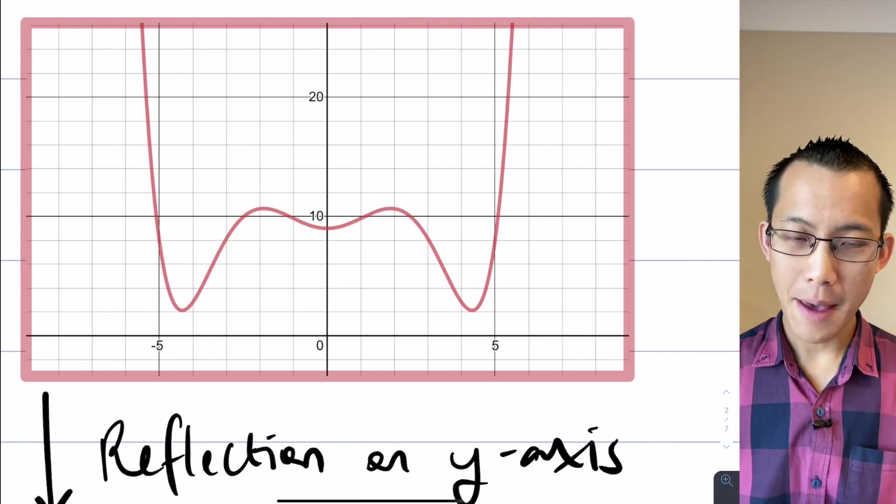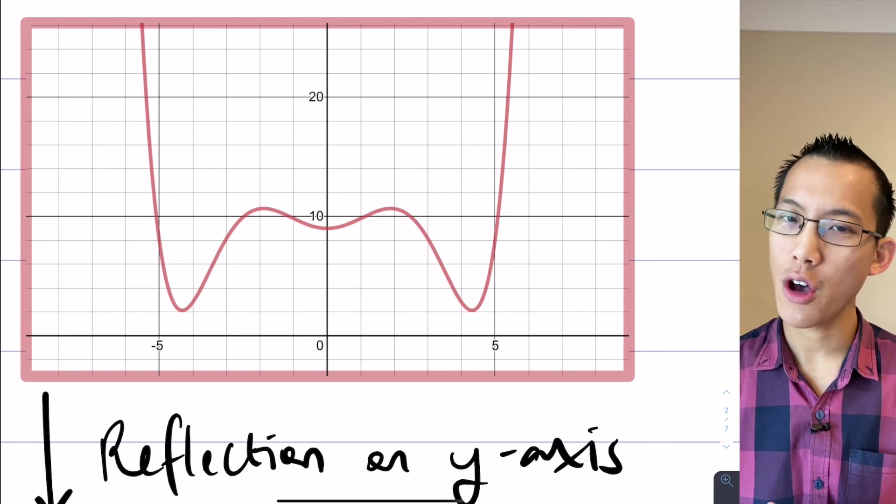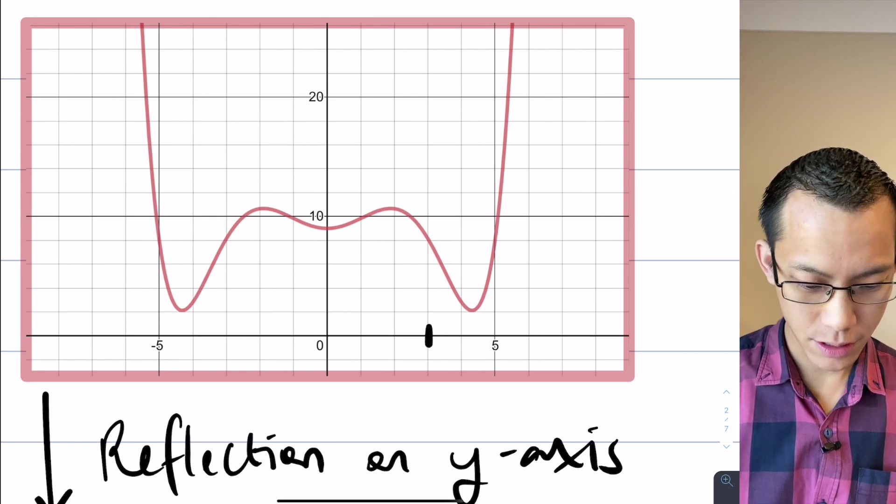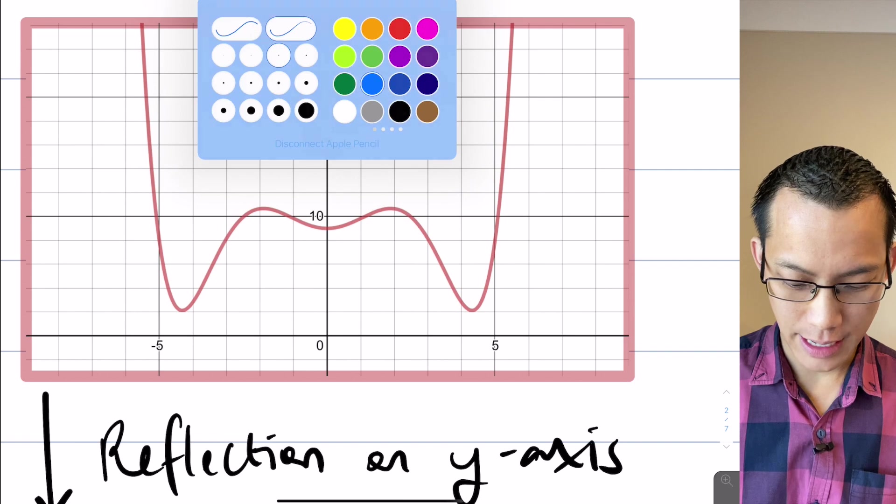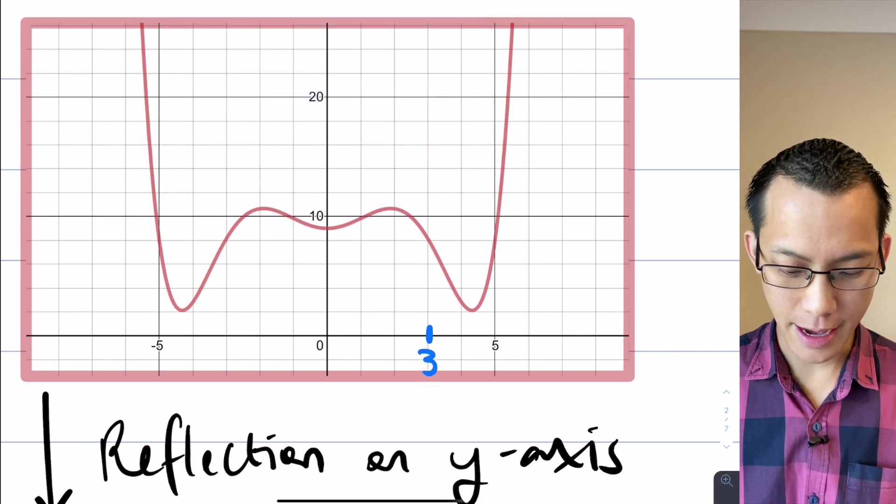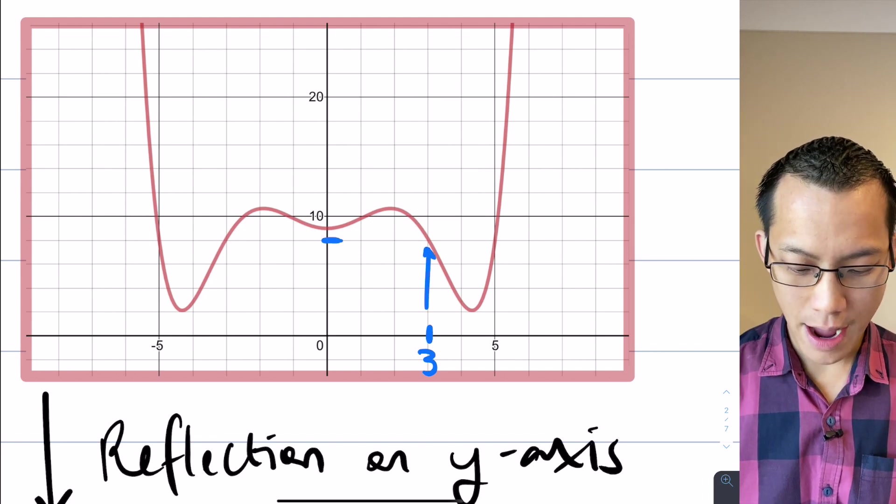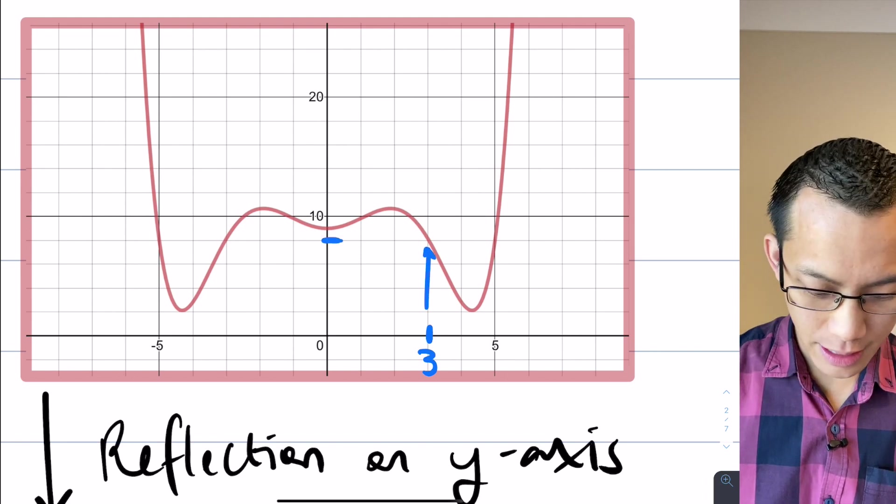What I mean is if you pick like some x value, okay, let's pick an x value like say that guy there. Let's choose a different color that's a little more standing out for you. Let's pick that guy there, that's an x value of 3.